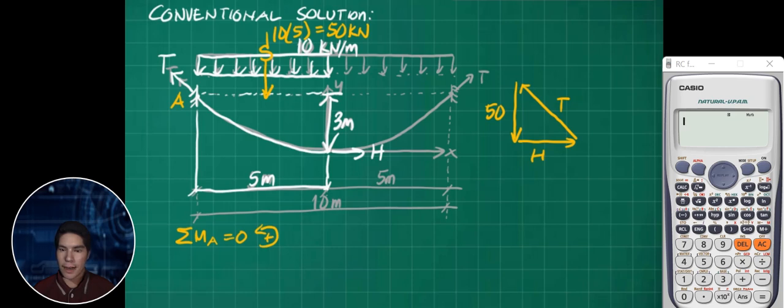We have H times 3 meters minus 10 times 5 times the moment arm in the middle, at least 5 halves. So we have 5 divided by 2. Therefore this is equal to 0, and we have the value of H.